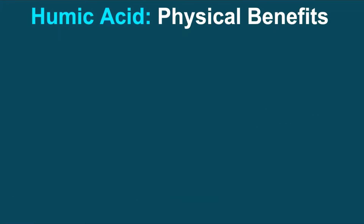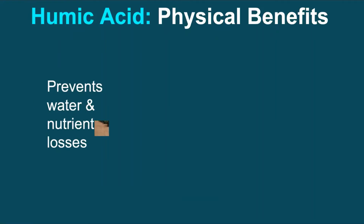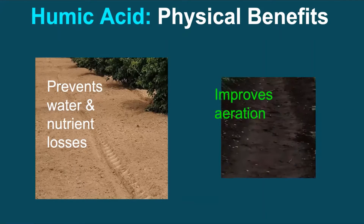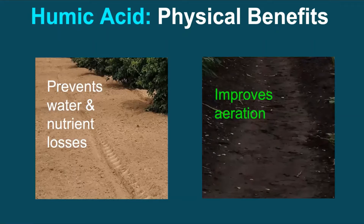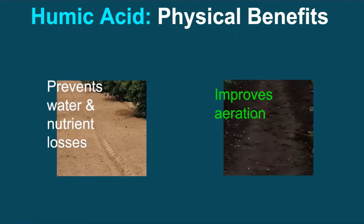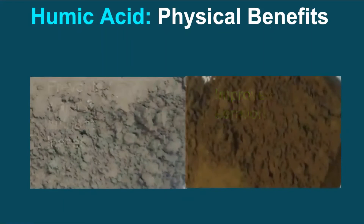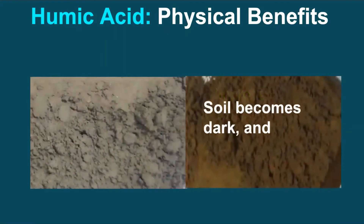Physically, humic acids modify the structure of the soil, which prevents water and nutrient losses, lowers soil erosion in lighter soils, and improves aeration in heavy soils. In general, soils become darker and absorb more energy from the sun.